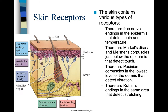The skin contains various types of receptors. There are free nerve endings in the epidermis that detect pain and temperature. There are Merkel's discs and Meissner's corpuscles just below the epidermis that detect touch. There are Pacinian corpuscles in the lowest level of the dermis that detect vibration. There are Ruffini's endings in the same area that detect stretching. As you can see in this diagram, these are all the different nerve endings.